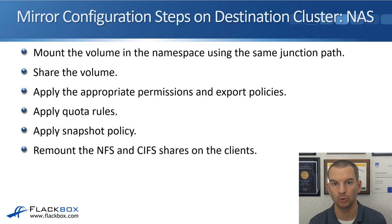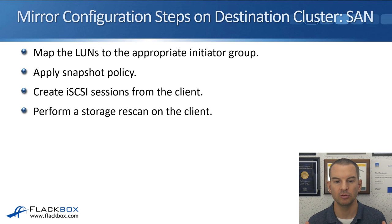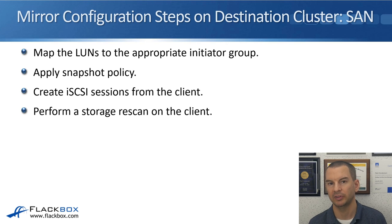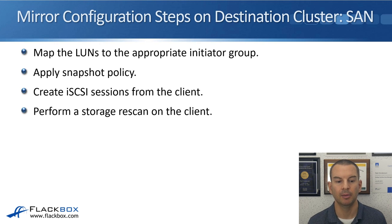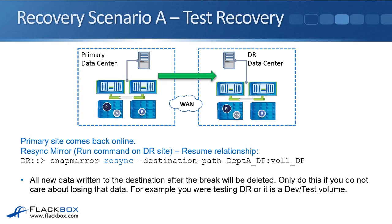If you're using SAN protocols, the things you need to do are: map the LUNs to the appropriate initiator group on the destination cluster, apply the snapshot policy, and then from the client side create new iSCSI sessions and perform a storage rescan for the LUNs to appear available. So the failover process is: run SnapMirror quiesce and SnapMirror break on the destination cluster, then configure all ONTAP settings on the destination cluster to allow client access.